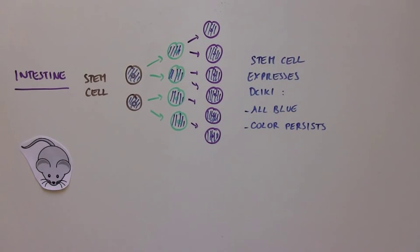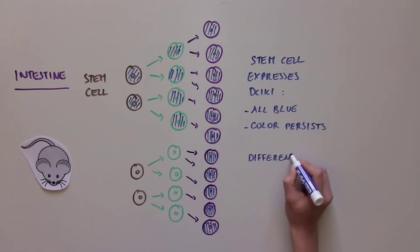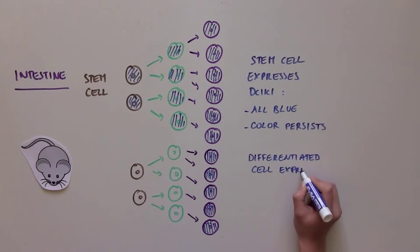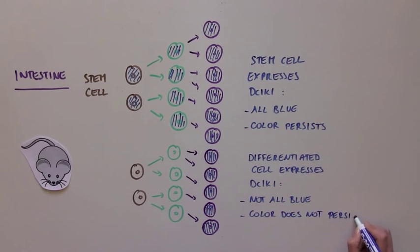But on the other hand, if a differentiated purple cell contains DCLK1, only those differentiated purple cells will be blue, since they are not dividing. So no other cells in the intestine will be blue, and the blue color will not persist, because the differentiated cell does not divide and will eventually die off.